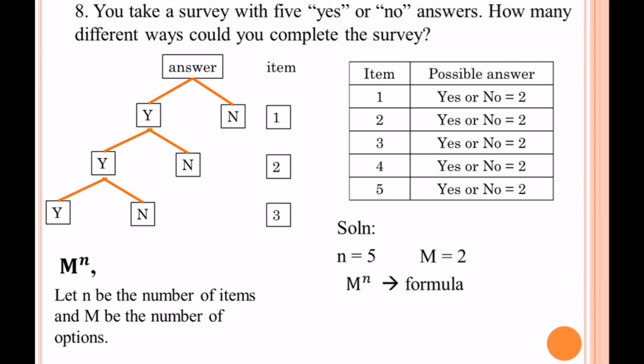We're going to use the formula to solve the number of different ways. That gives us two to the power of five, and two to the power of five gives a product of 32.